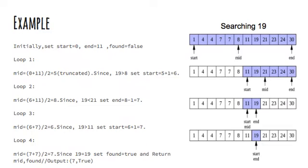Now let's try to understand it. Here let's consider the list shown in the image and we want to search 19 in it. Initially we will set the start equal to 0 and end equal to 11 and found equal to false. So in loop 1 mid is equal to 5 as calculated over here. Now since 19 is greater than 18 so we will drop the first half and we will set the start equal to 5 plus 1 which will be 6.